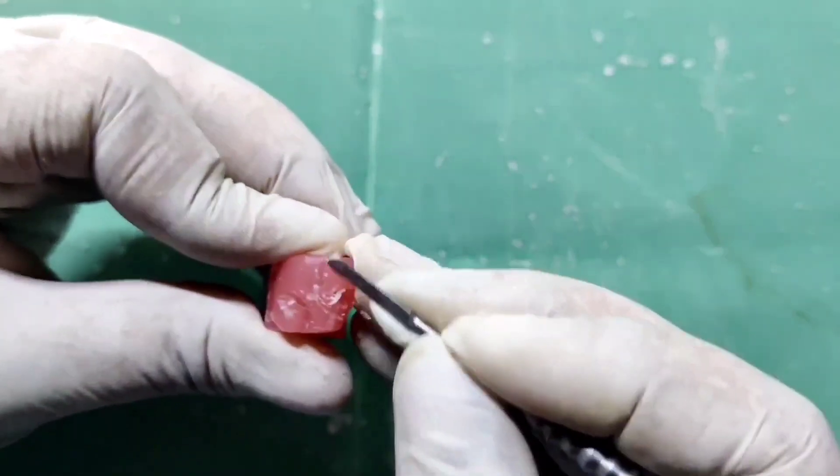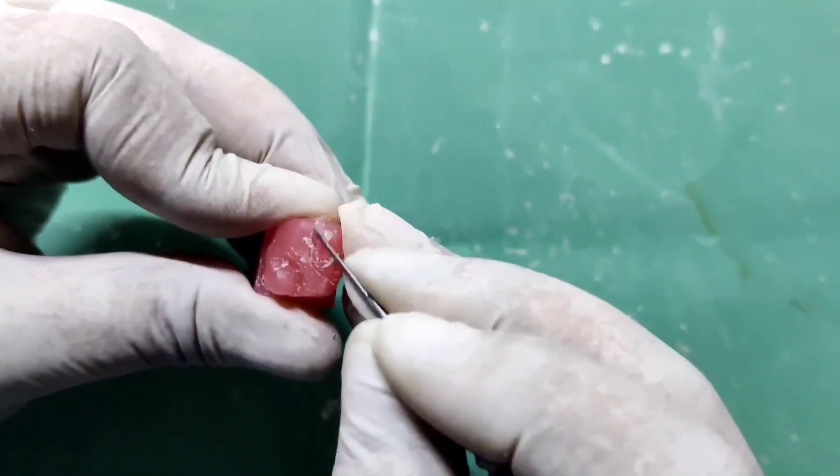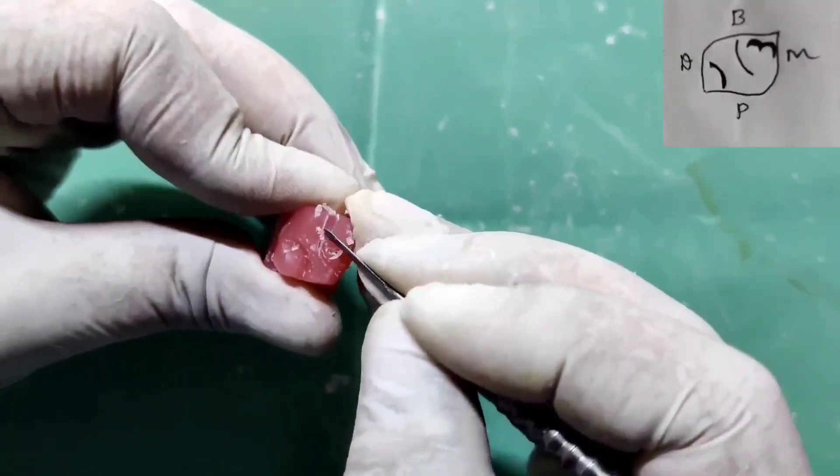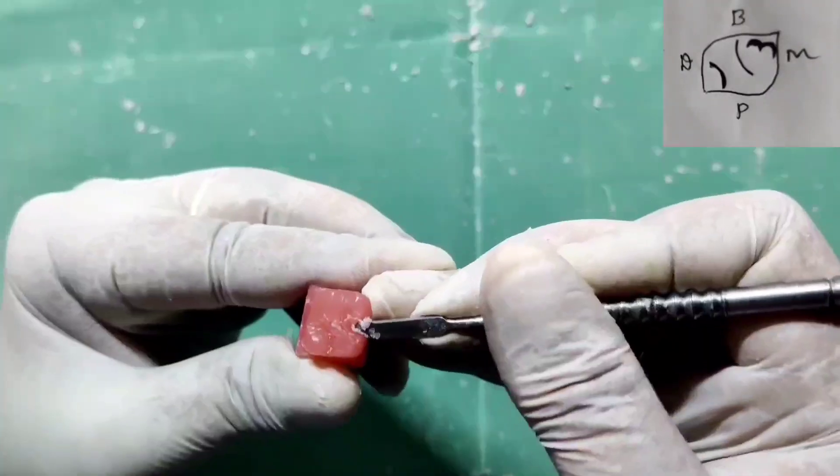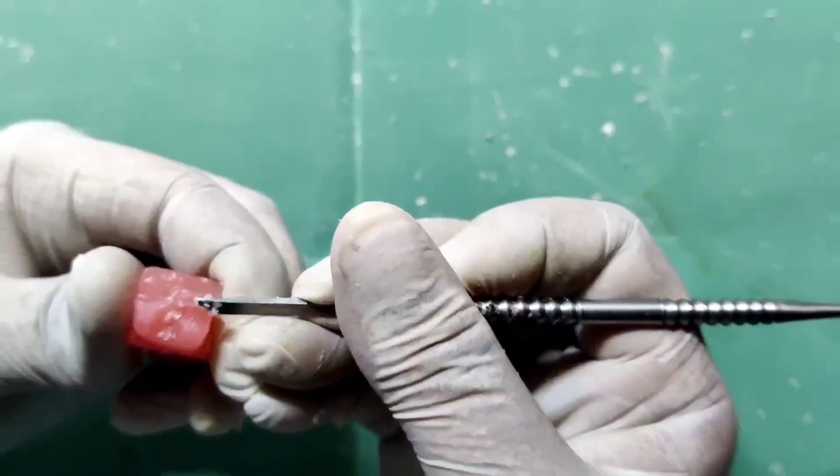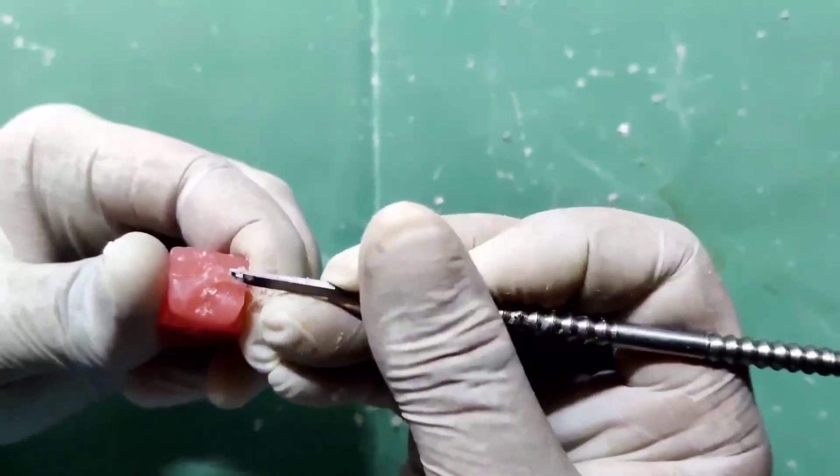Make the buccal groove by extending the outline on the buccal surface till the mesiolingual cusp. Start making the distobuccal cusp.